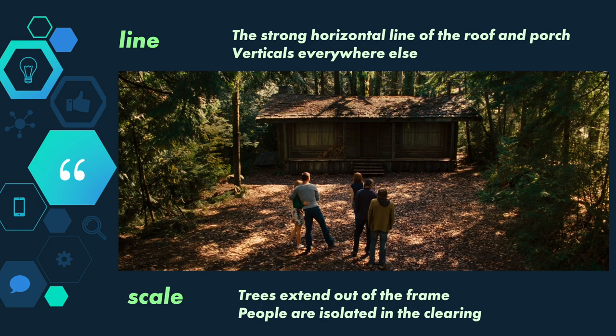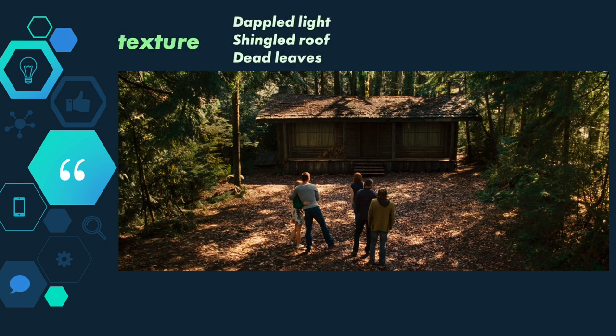Which brings us to scale. You can tell it's not a big cabin — it's single story, and it's dwarfed by the trees that extend up and out of the frame. But it still takes up most of the shot, and the people in front of it seem dwarfed by its visual mass. They're also isolated within that clearing, which adds to the sense of isolation we can infer from this wooded location. And finally, texture. Because it's the lightest value, the dappled light is one of the most obvious textures in this image. The way it filters through the trees subconsciously tells us that these woods keep going. The shingled roof on the top of the cabin is old and unkempt, and its texture echoes the texture of the dead leaves on the ground. So against all of that organic, natural texture, the characters stand out.